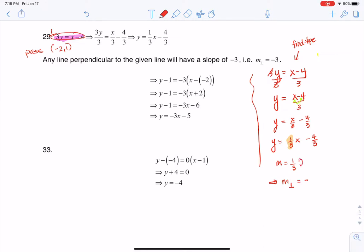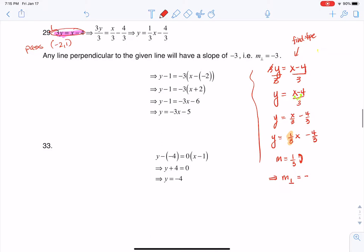And the reciprocal of 1/3, if I swap out the 3 and the 1, the 3 goes to the numerator and the 1 goes to the denominator. Well, then that's going to be -3/1, or really just -3. So that's why you see me writing that here, that the slope of any line perpendicular to the given line is -3.